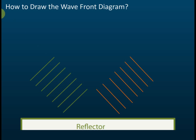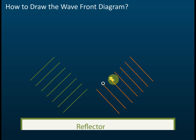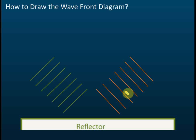Use your ruler to check the distances — measure the spacing here and also here, making sure they are the same. This is how to draw the wavefront diagram. A lot of students think it's easy, but it's not — drawing a good reflected wavefront diagram requires care.